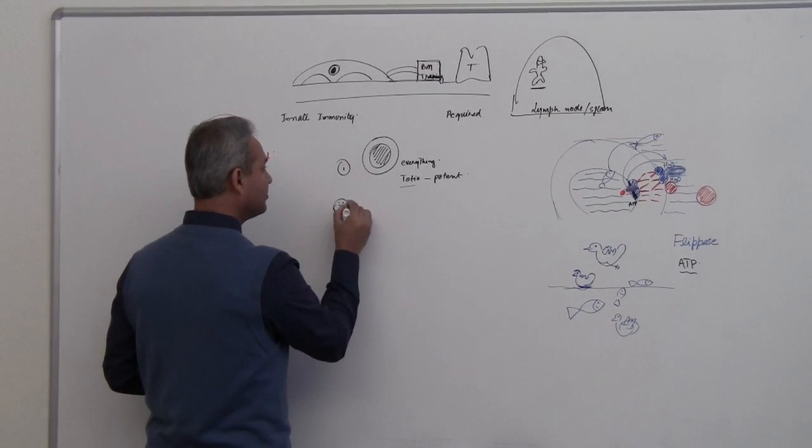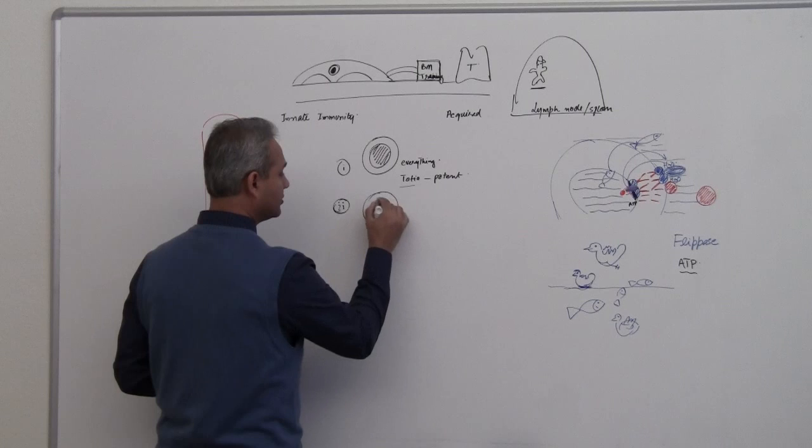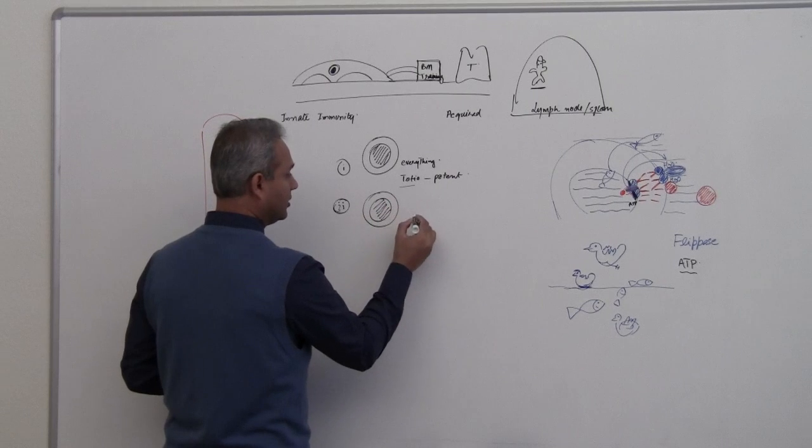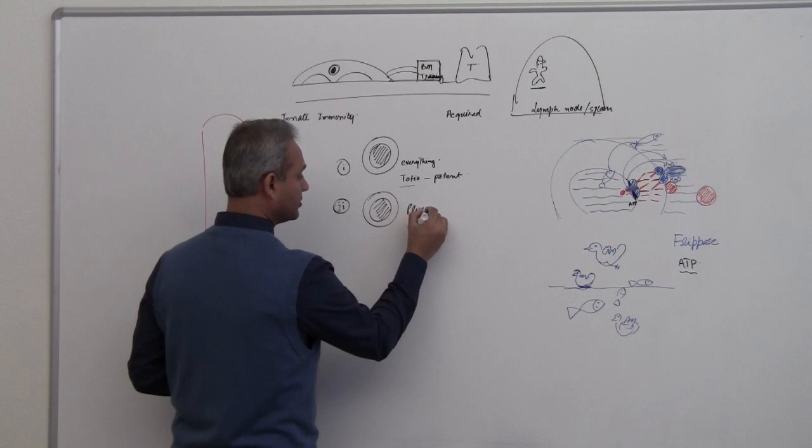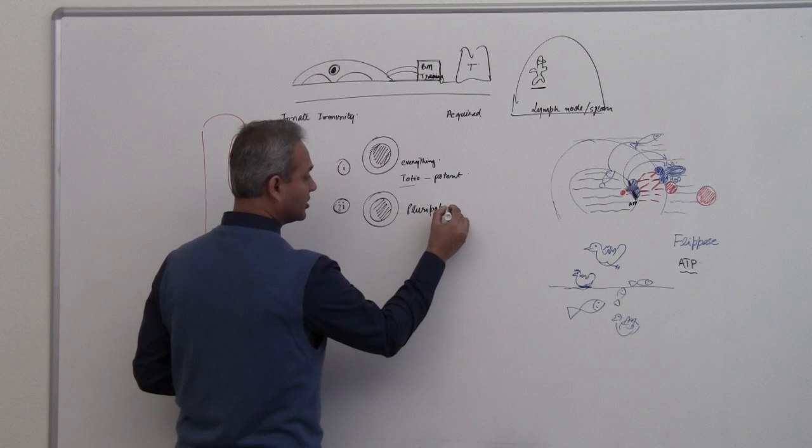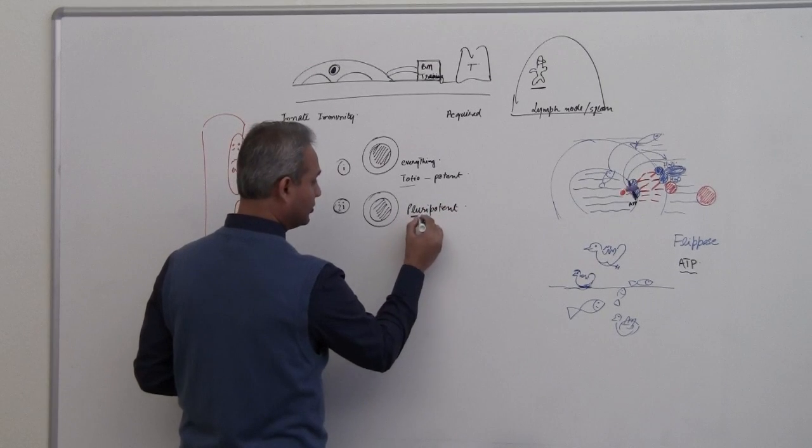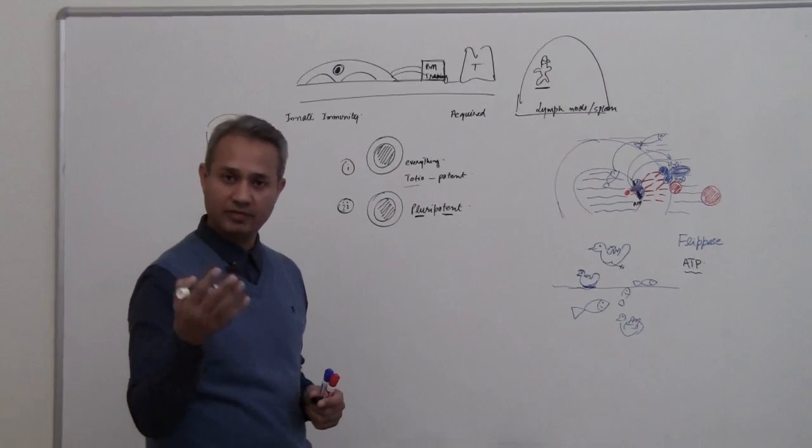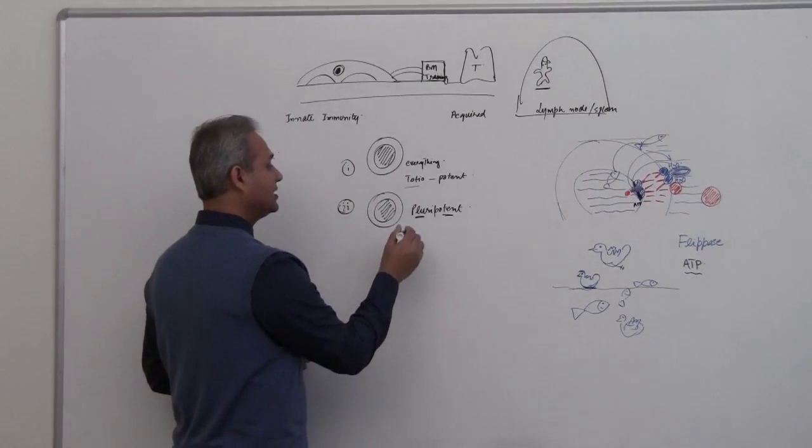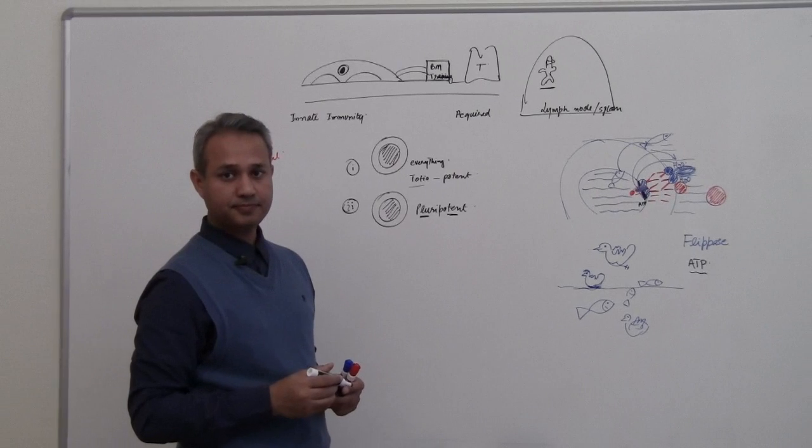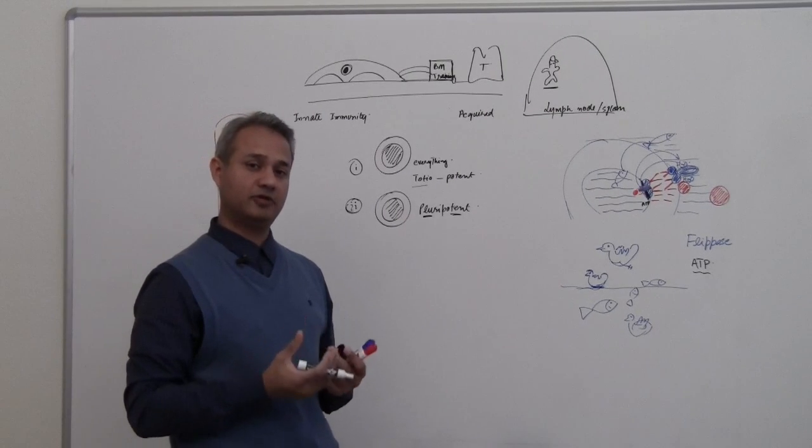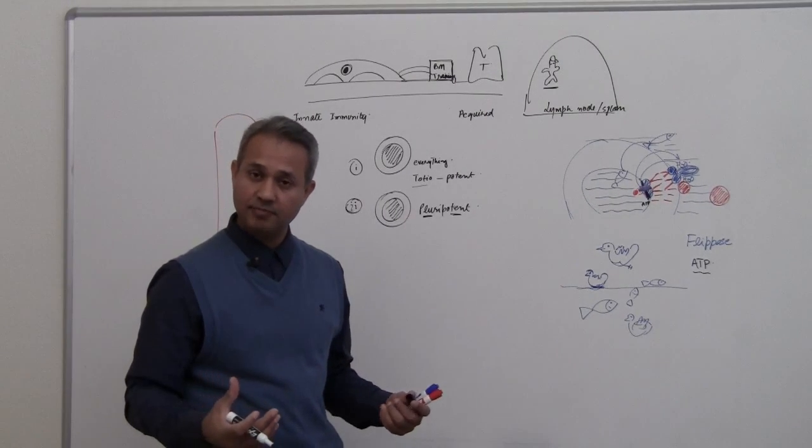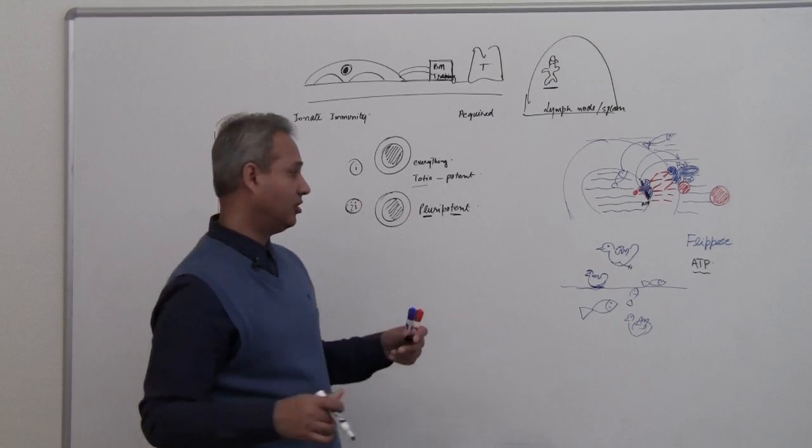The other is pluripotent. Pluri means multiple or plural, but it cannot make the whole organism. It can make a part of the organism, multiple cell types, but a part, not the full organism.